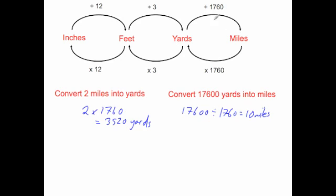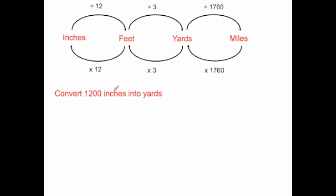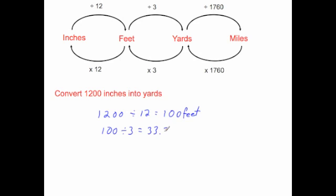Let's have a look at some examples where we have to do more than one conversion. Convert 1,200 inches into yards. I need to go from inches into feet first, then into yards. So 1,200 inches divided by 12 is equal to 100 feet. Now converting 100 feet into yards: 100 divided by 3 is equal to 33.3 recurring yards, which is the same as 33 and a third yards.